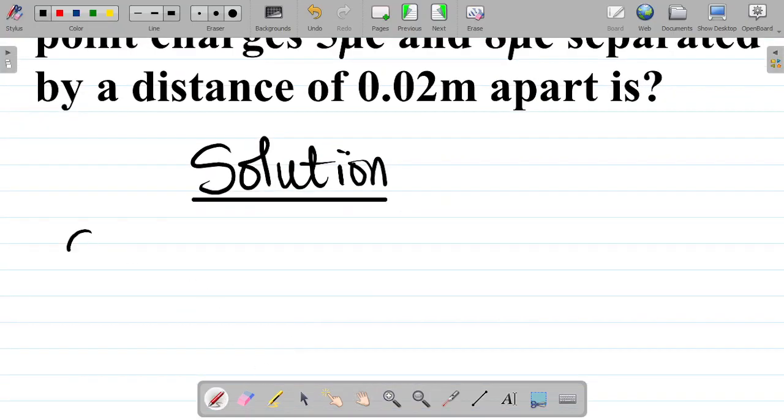So let's take Q1. Given: So first, list out given parameters. The first thing given is Q1 and Q1 is equal to 5 microcolumb.